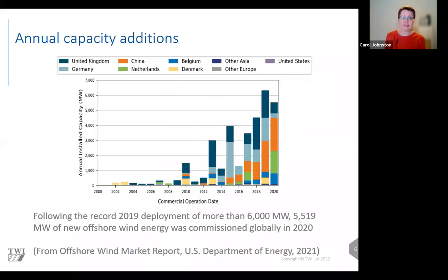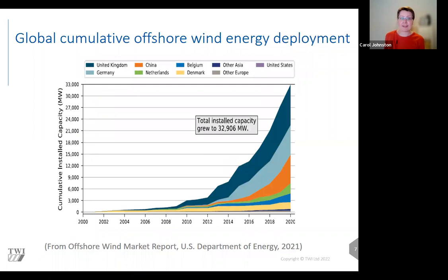To set the scene, this plot shows the annual increase in installed capacity of wind farms around the world. 2019 was a record year for installed wind farm capacity, in which 6,000 megawatts was installed worldwide, and 2020 almost matched that amount. A few years ago Germany was installing the most capacity, but in recent years the largest capacity increases have been in the UK and China. There was 32 gigawatts installed globally as of 2020, and this plot shows how rapidly the rate of installation is increasing.